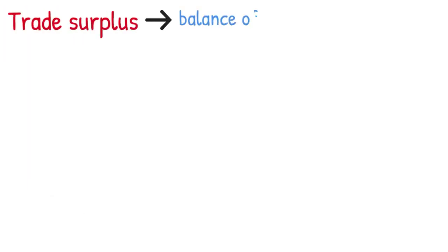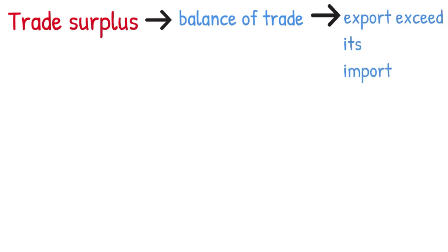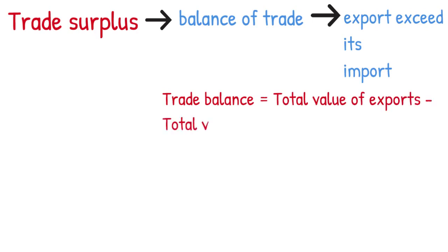What is trade surplus? A trade surplus is an economic measure of a positive balance of trade, where a country's exports exceed its imports. Trade balance equals total value of exports minus total value of imports. A trade surplus occurs when the result of the above calculation is positive.